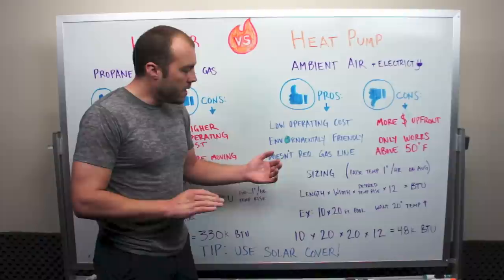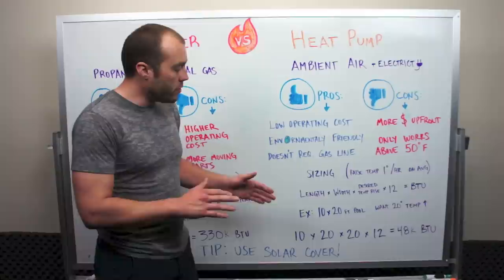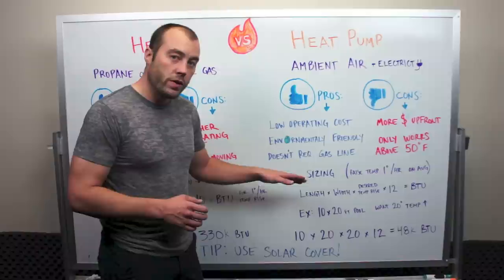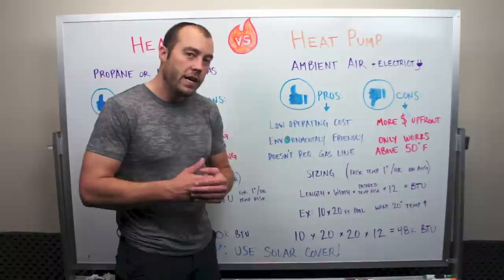Now let's take a look at sizing. For a heat pump, we're going to assume that we want to raise the temperature one degree per hour. The formula to figure out the recommended BTU is length times width of your pool times desired temperature raise times 12.